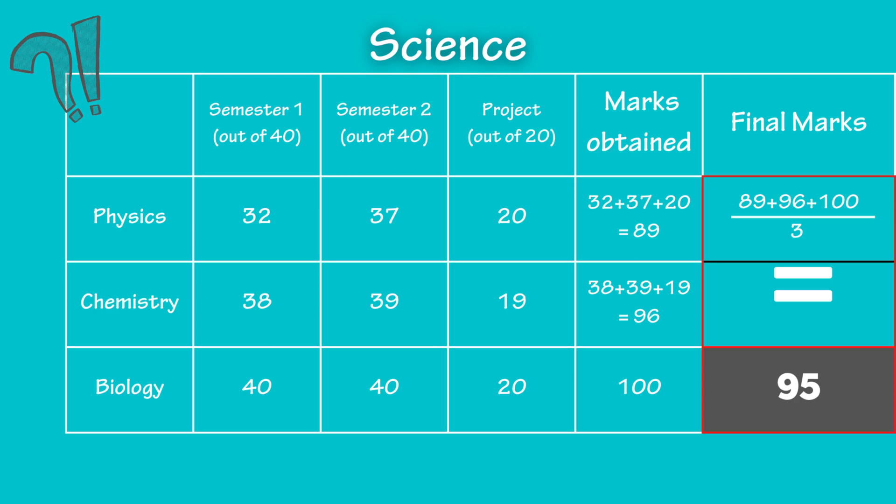Then chemistry. First semester, 38 out of 40. Second semester, 39 out of 40. And in project work, 19 marks. Total final marks for chemistry is 96. Similarly, biology, 40 on 40 in SEM 1, 40 on 40 in SEM 2 and project work, full 20 marks. An ideal situation. This is just an assumption. Hope so all of you get same marks like this. So total for biology is 100 marks. Marks that our imaginary student score in science will be average of final marks scored in physics, chemistry and biology. That is 89 plus 96 plus 100 upon 3, which will be equal to 95. Yes, it is possible to score 95 out of 100 in science in spite of a debacle in your physics paper.